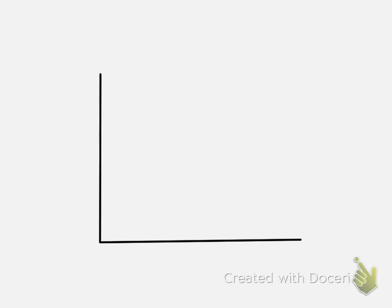So we're going to start with these axes, and the x-axis we will label quantity, and abbreviate that with a Q. You can also think of that as the firm's output. And on the y-axis we have the cost per unit.